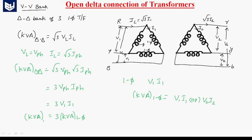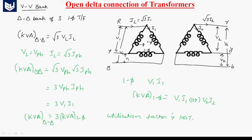For the delta-delta combination, all three transformers are effectively used, so we can say the utilization factor is 100%. Now let us look at the open delta connection of the transformer.